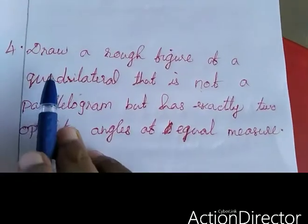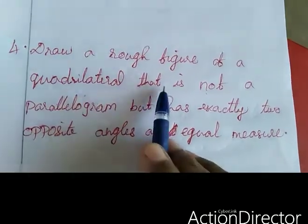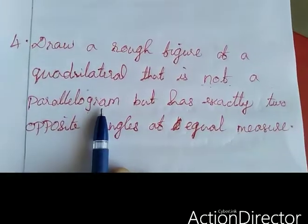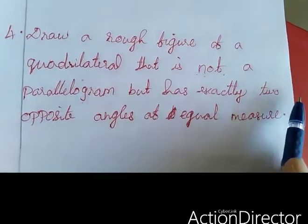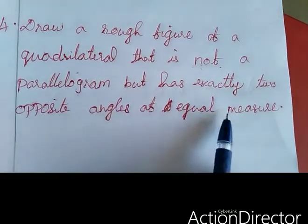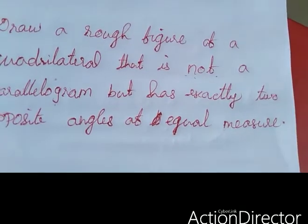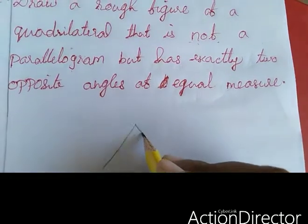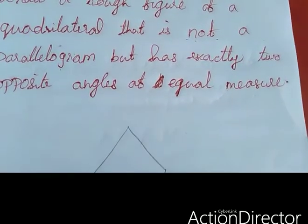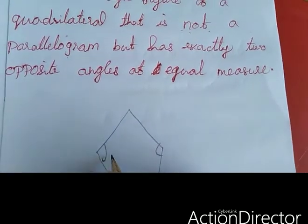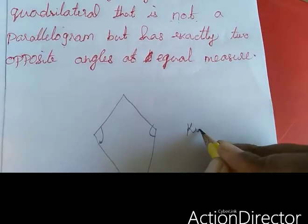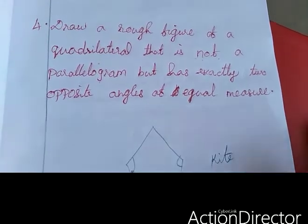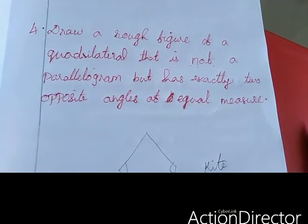Fourth sum: Draw a rough figure of a quadrilateral that is not a parallelogram but has exactly two opposite angles of equal measure. In a kite, two opposite angles are equal. So the figure is a kite. That is all — the class is over. We will continue in the next class. Thank you, dears.